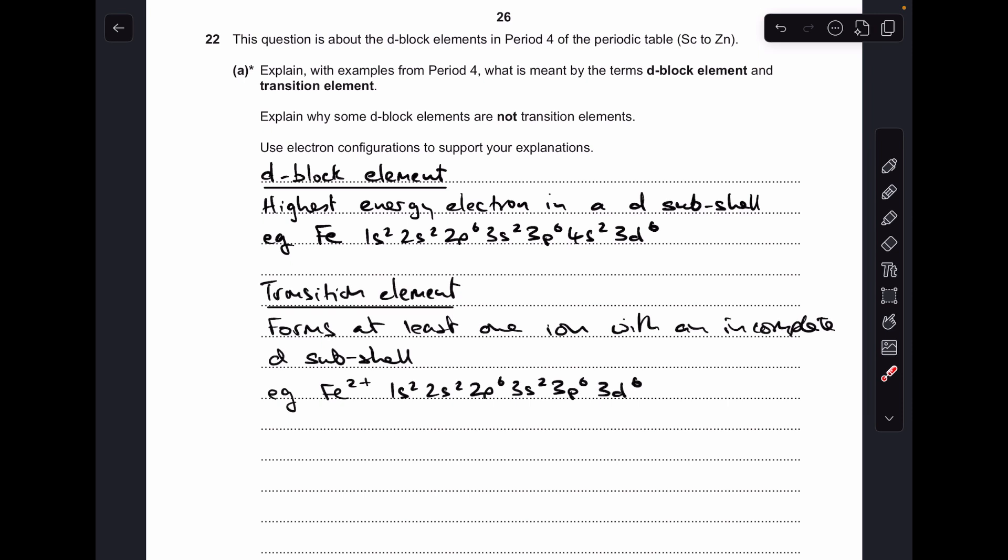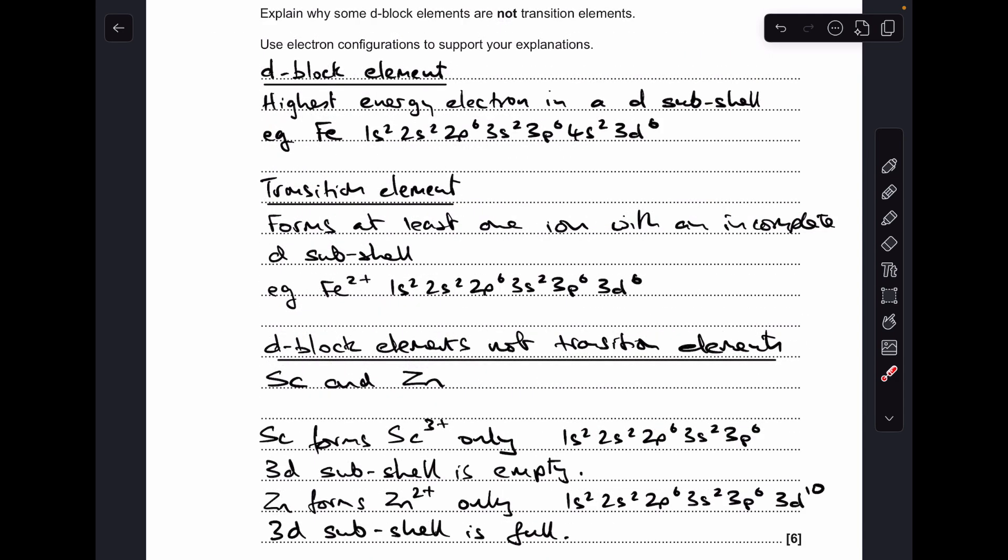Next thing I'm going to explain is what is meant by a transition element. So they form at least one ion with an incomplete d-subshell. Because I've gone for iron as my example, I've just gone for iron 2+, and I've written out its electron configuration. Remember, the 4S electrons are lost first when the transition elements form their ions.